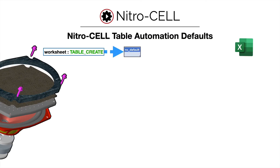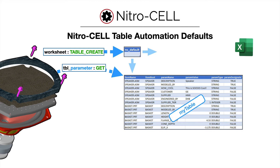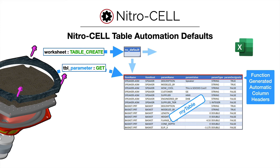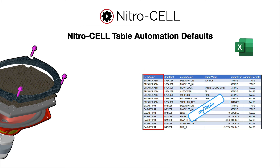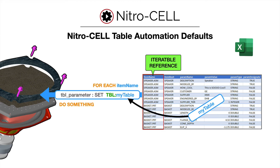As an example, you would run a worksheet create to generate a default table — this also works if you did it manually and renamed it. Tables in Excel by default are designed to expand horizontally to the right and downward. When you run a function from NitroCell, such as a table parameter get function, it will not only generate the table with the proper columns it needs, but also write the data in the required format. Anytime you run the same type of command to the same table, it will append by default. Every item within a table's item name column is considered an iterable reference, so you can use it with other NitroCell functions to perform other operations — a single command can iterate through each item in the table and perform those updates.